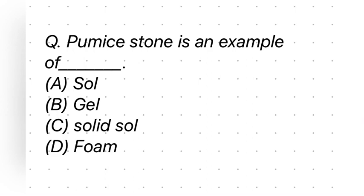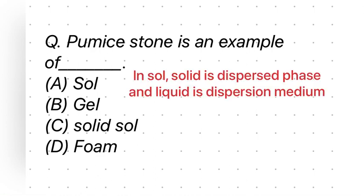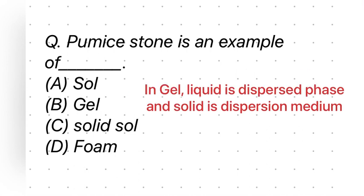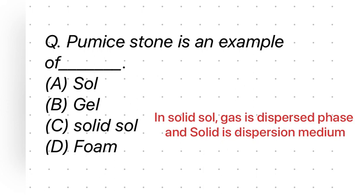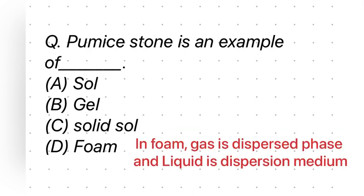Pumice stone is an example of — four options are given: A) Sol, B) Gel, C) Solid Sol, and D) Foam. In a Sol, solid is the dispersed phase and liquid is the dispersion medium. In Gel, liquid is the dispersed phase and solid is the dispersion medium. In Solid Sol, gas is the dispersed phase and solid is the dispersion medium. In Foam, gas is the dispersed phase and liquid is the dispersion medium.